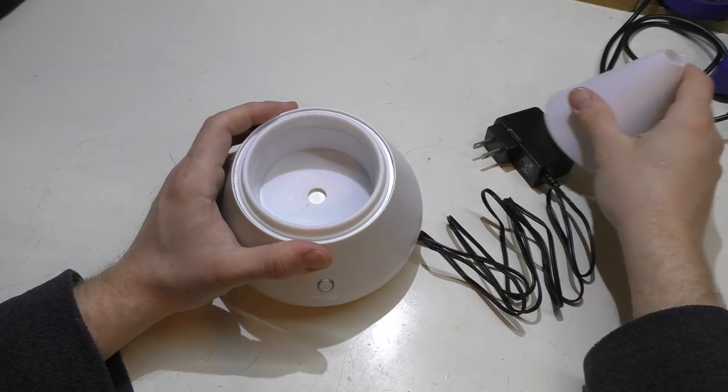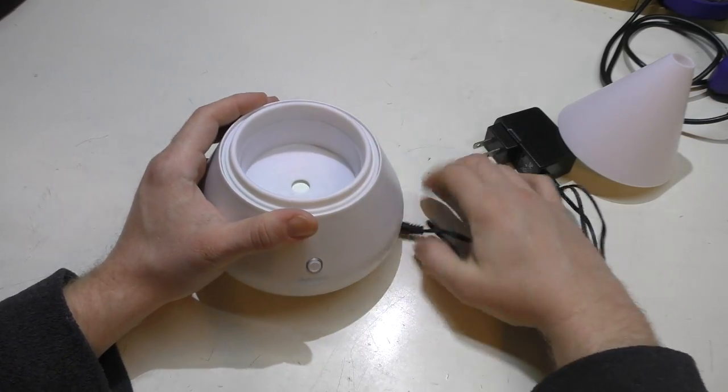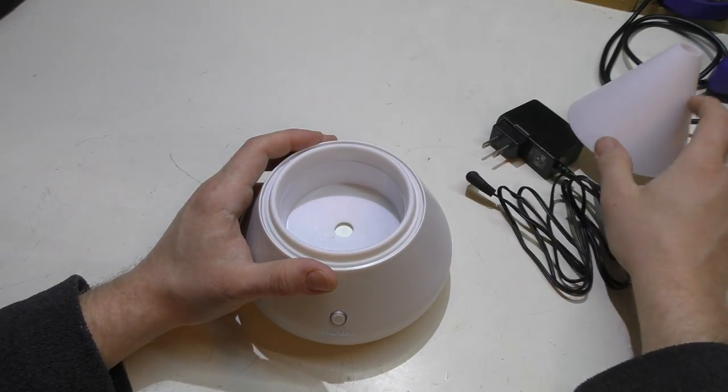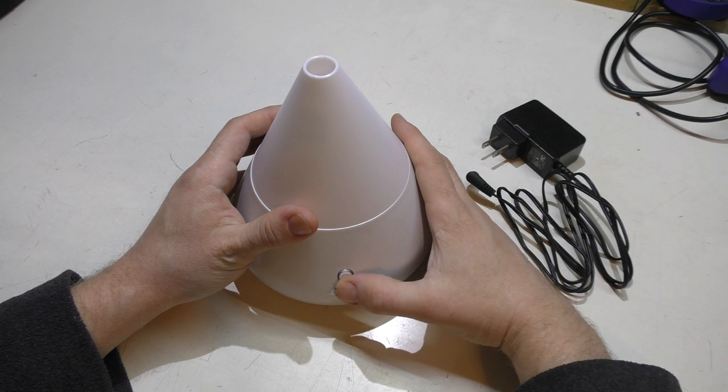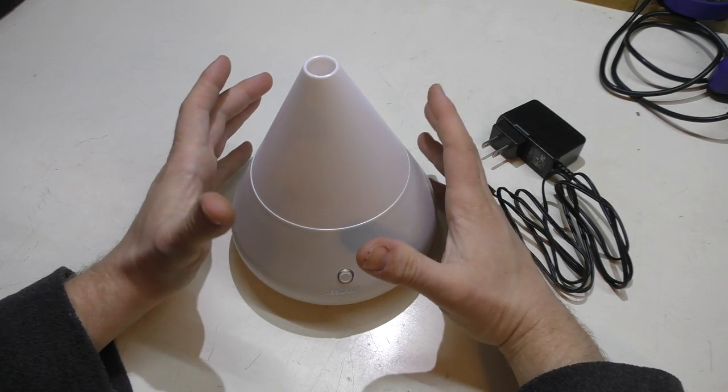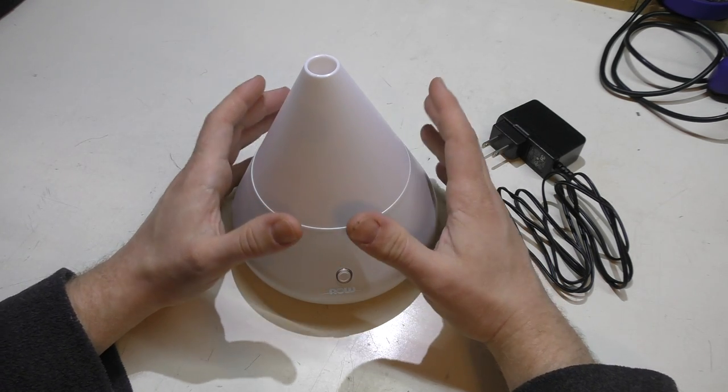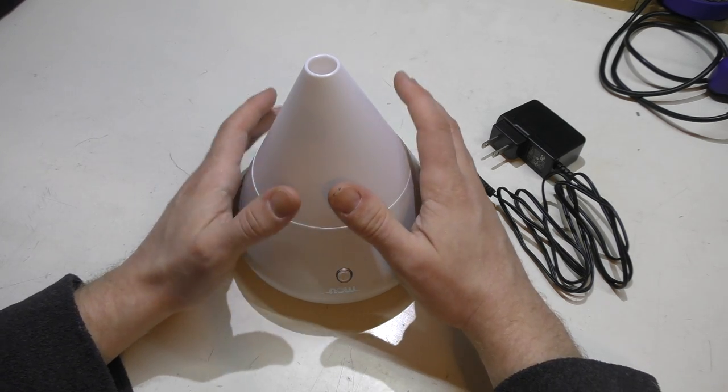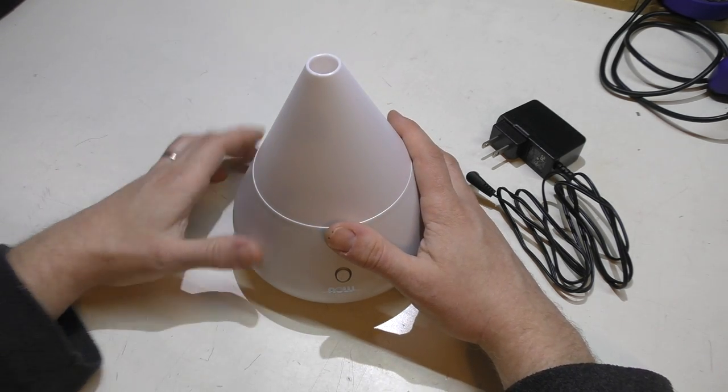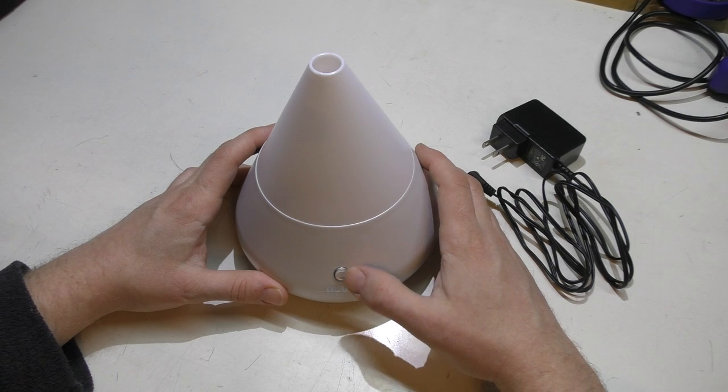The way this works is you open this up, fill the line here with water, put a couple drops of your essential oil in here, put the top back on. You push this button and it'll turn on. It'll start diffusing the water oil mixture right away. You'll get this cold steam out the top. This little button will light up blue.